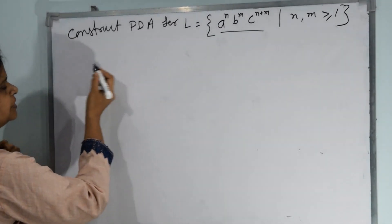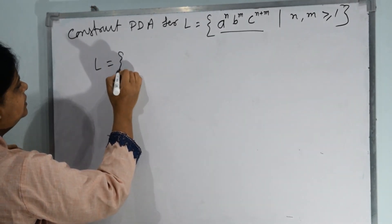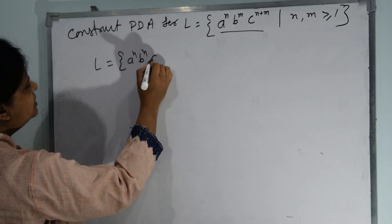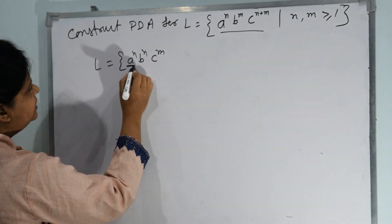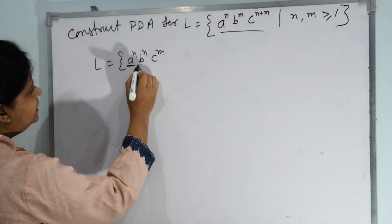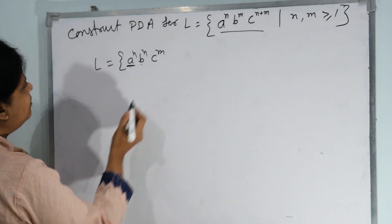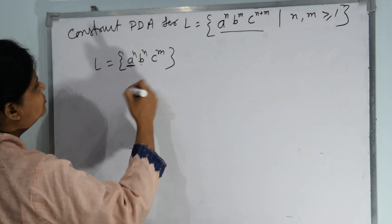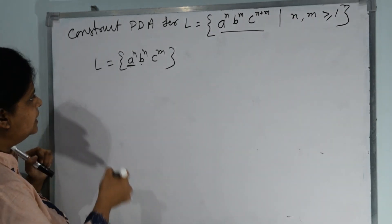Before solving this question, I want to tell you about the previous question I took here: A^N B^N C^N. In that, what I did here was insert this and to make B equivalent to A, we popped A. And C, whatever it was, we just left it unchanged.